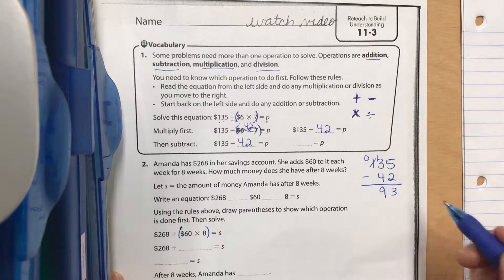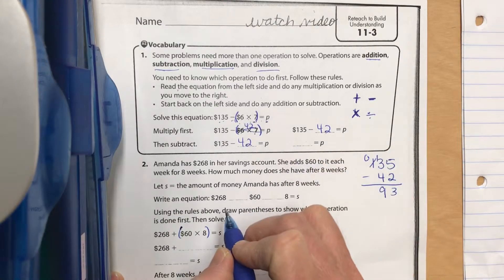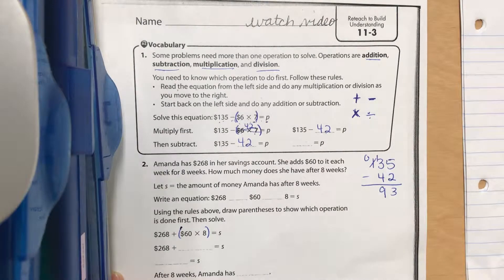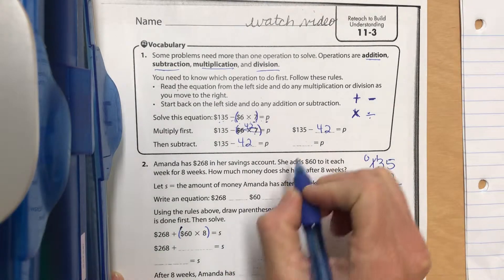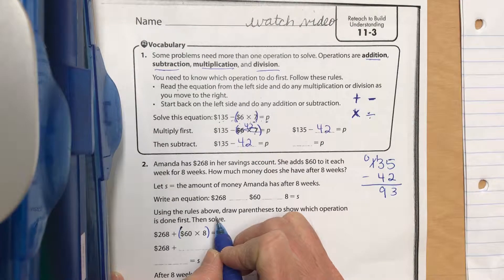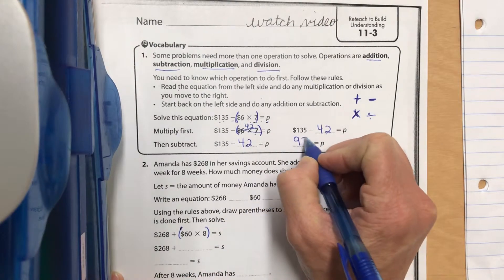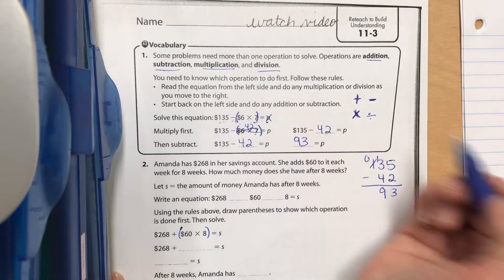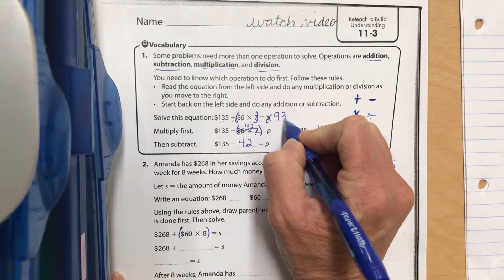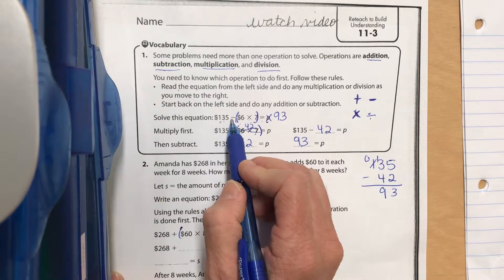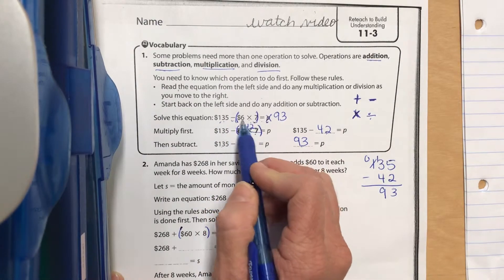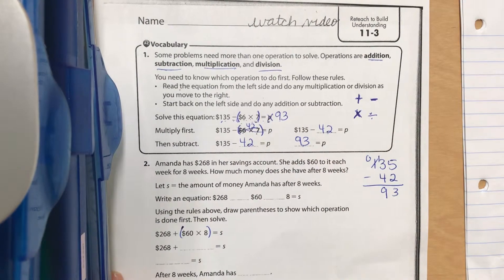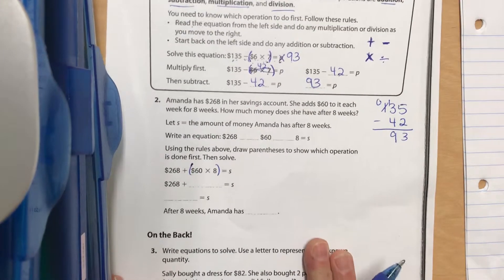We should get 93. So if it's saying 93 equals P, what it means is we could take this P, cross it out and put 93 there. So 135 minus six times seven, which six times seven is 42, so 135 minus 42 is in fact 93.